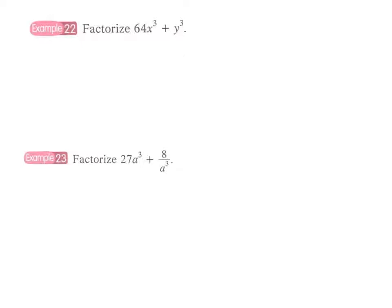Example 22: factorize 64x³ plus y³. Again we have the sum of two cubes — the first one is the cube of 4x, and the second one is the cube of y.